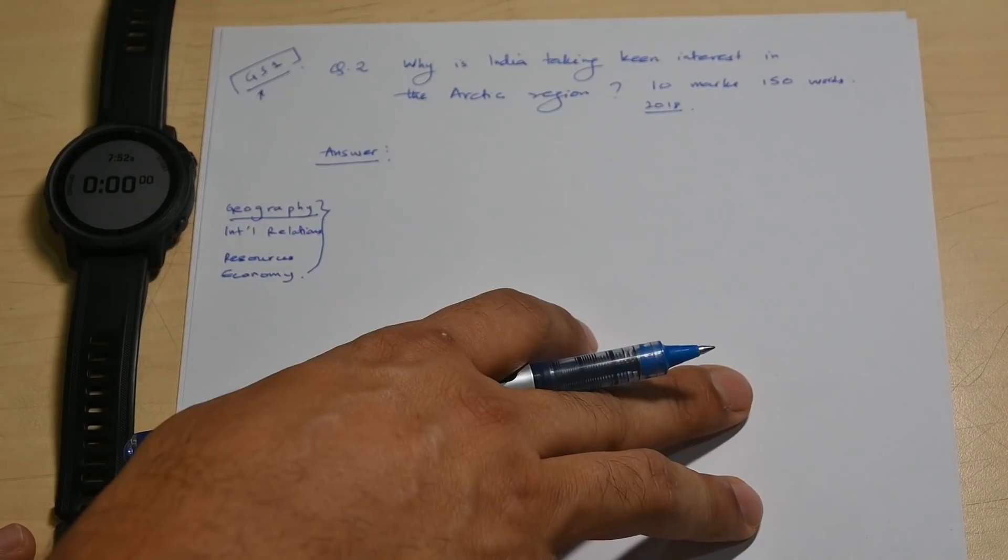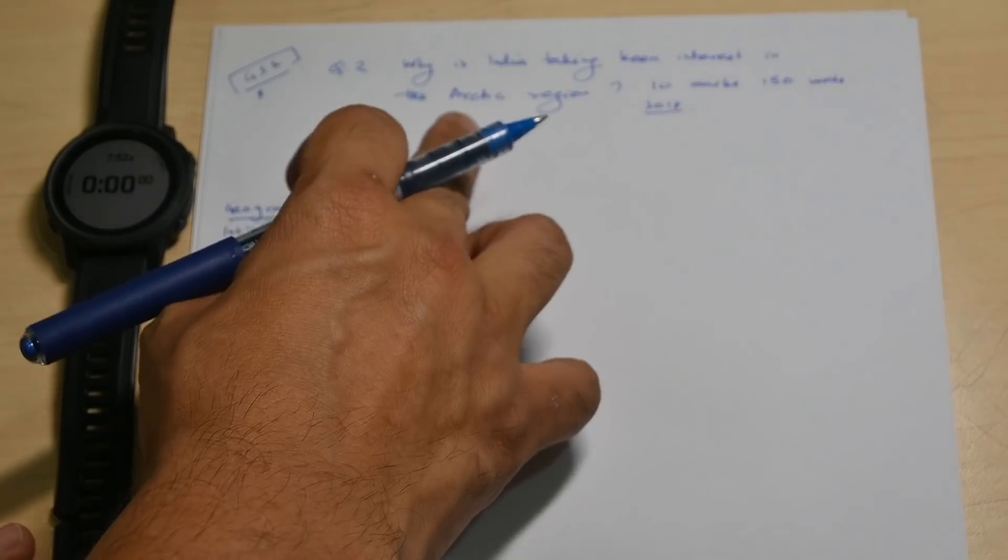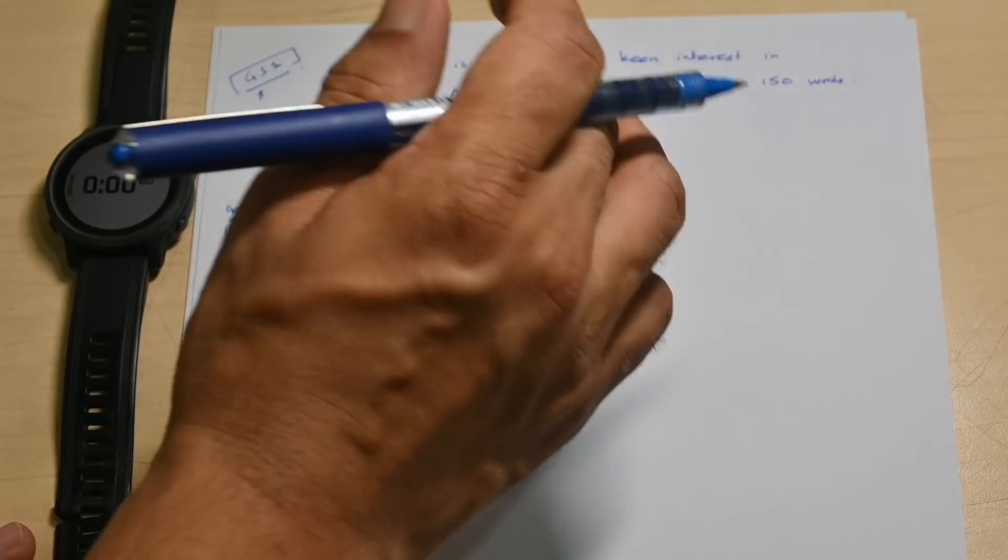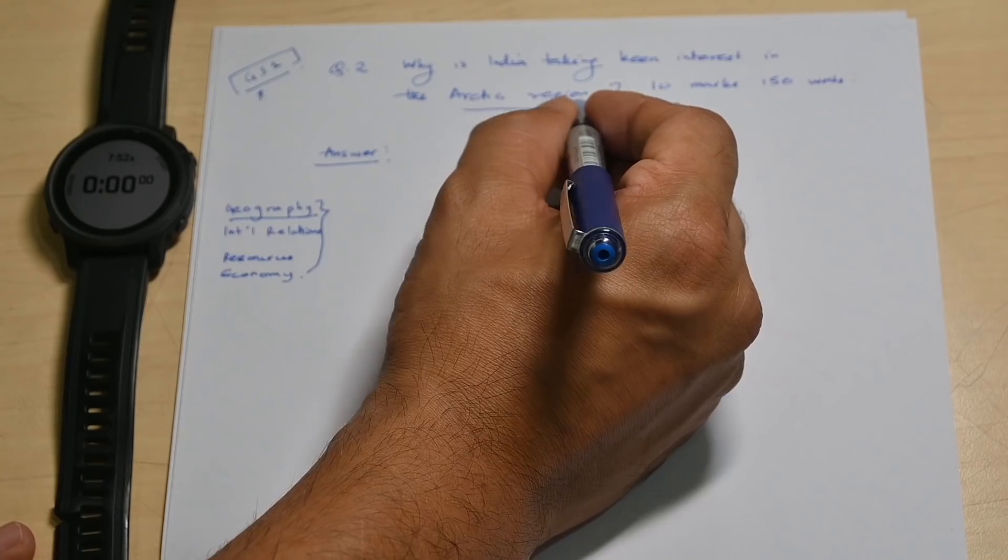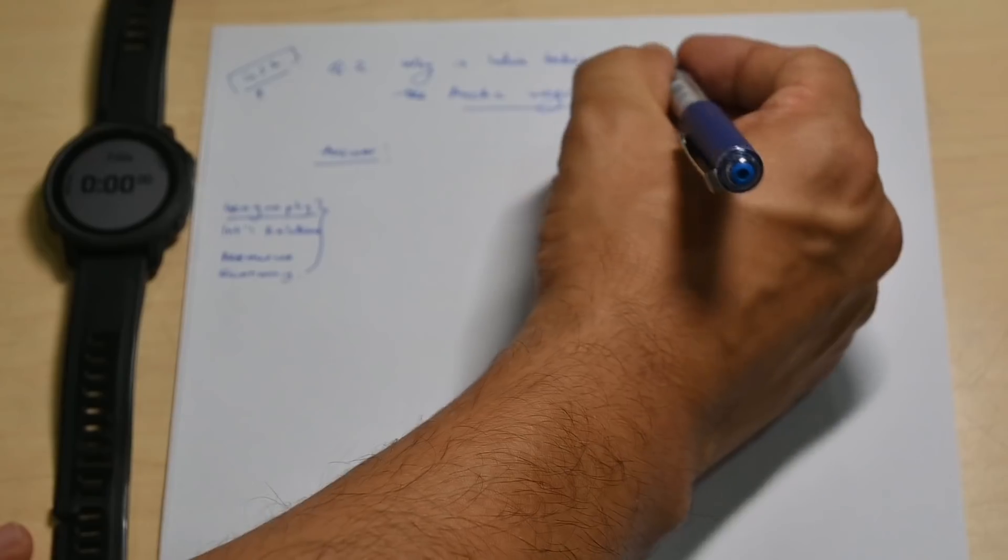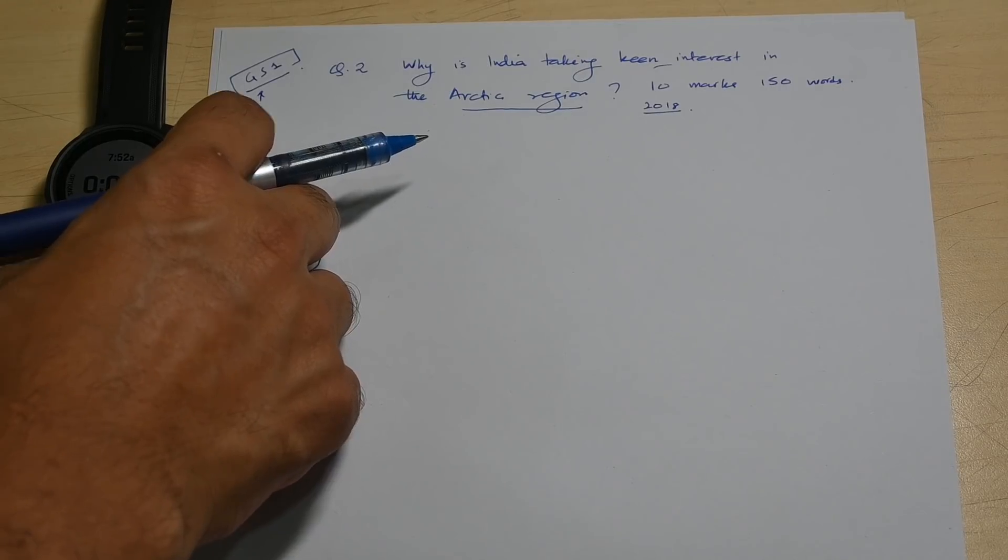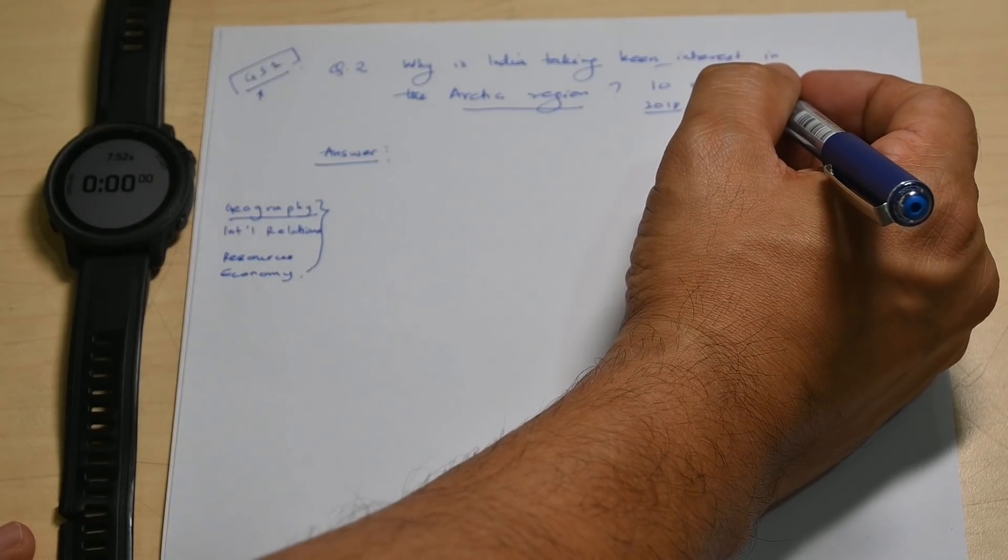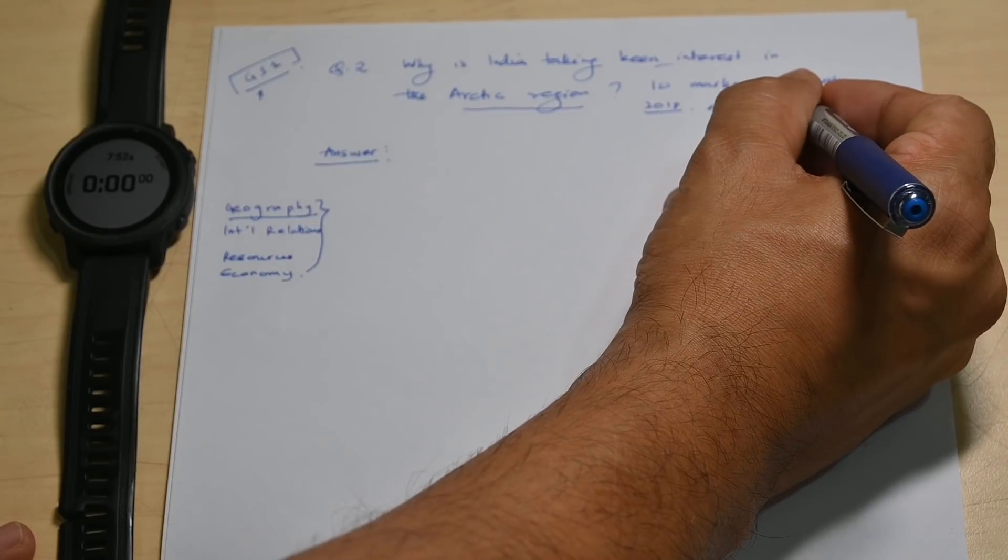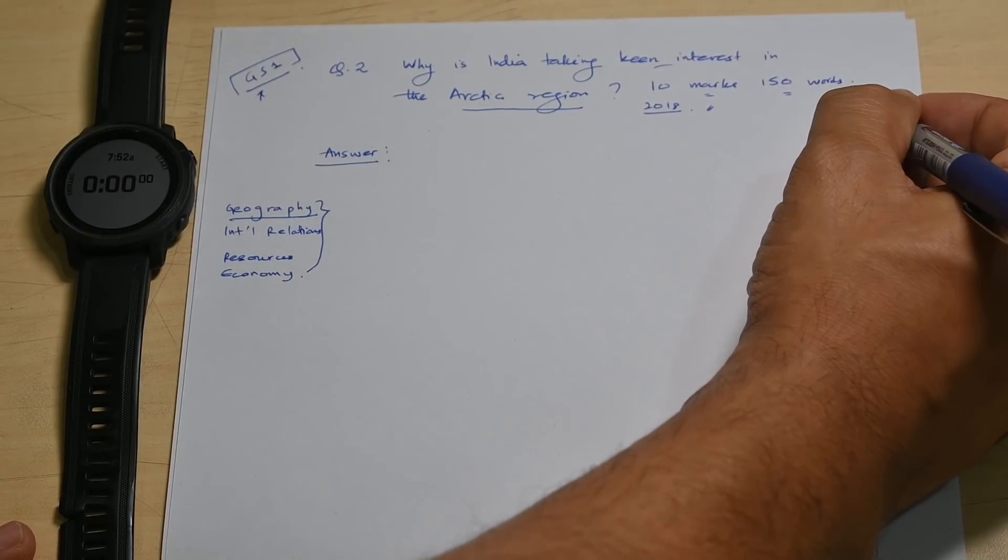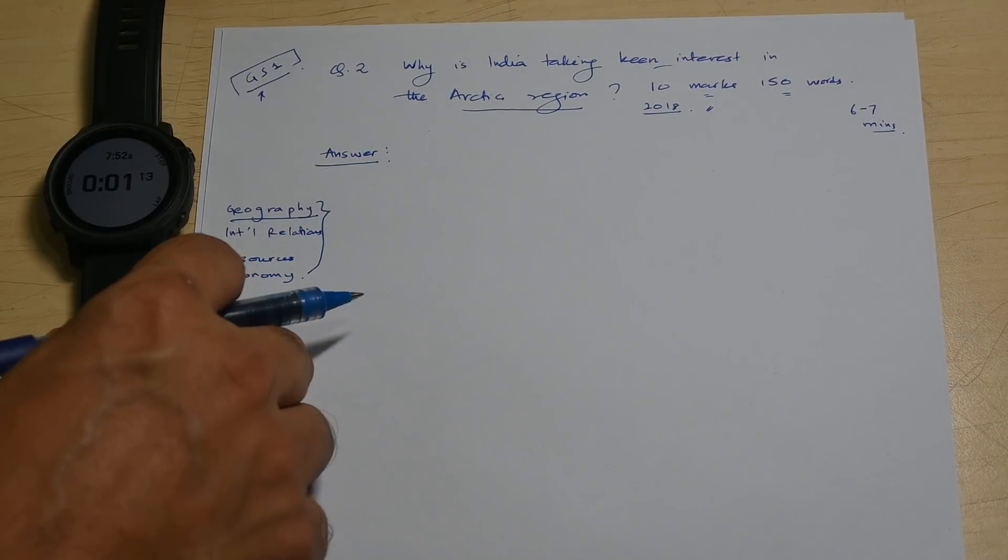It is a question that covers a gamut of topics or subjects that you should know which is geography of course first of all. Then you also need to understand something about international relations, resources, economic resources and how they affect overall strategy of India when it comes to the Arctic region. Clearly, since it is encompassing these various topics, you have to be able to write a holistic answer that covers these different dimensions. If you write it only from the perspective of geography, you are not going to get even sufficient content or sufficient marks eventually.